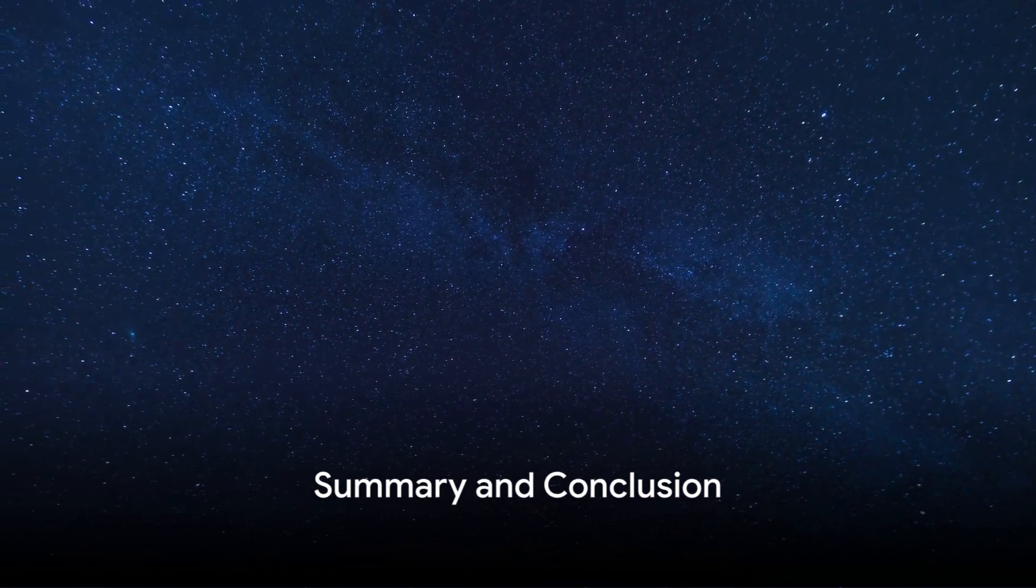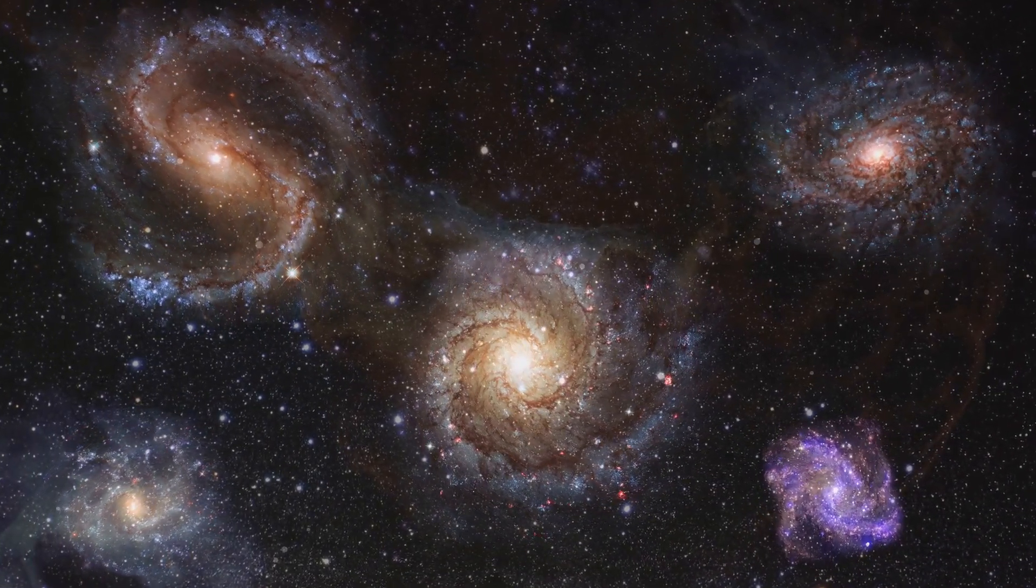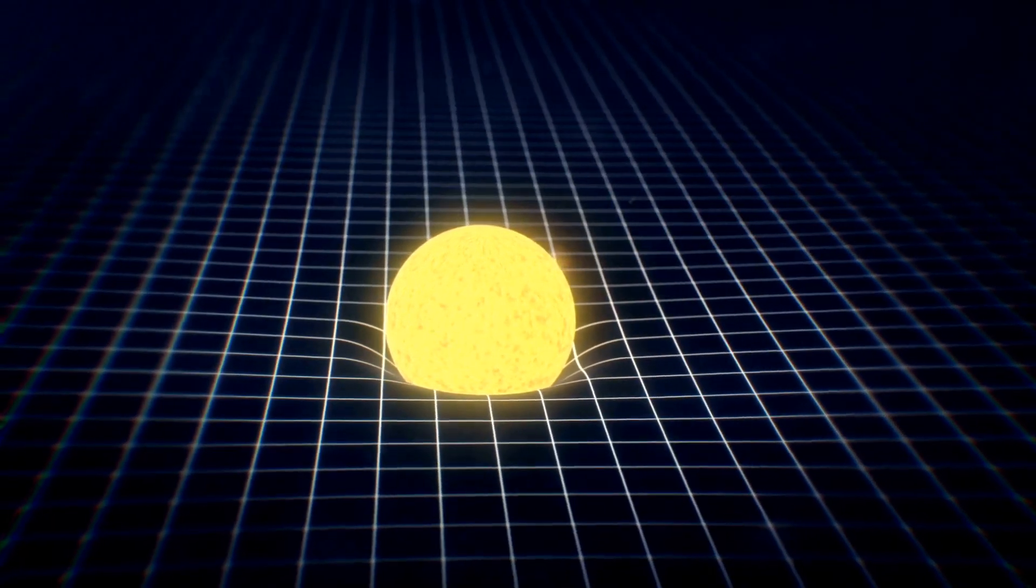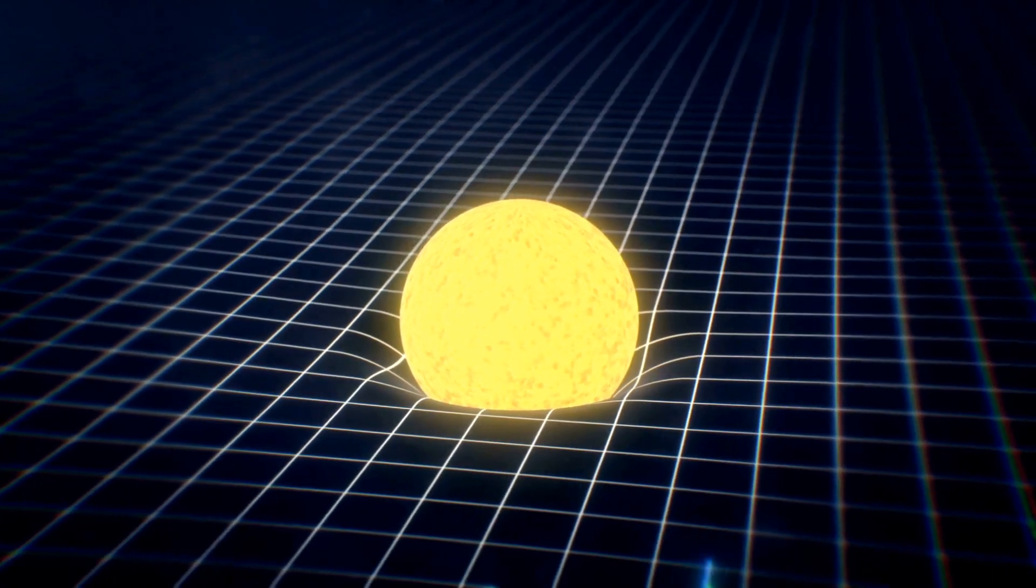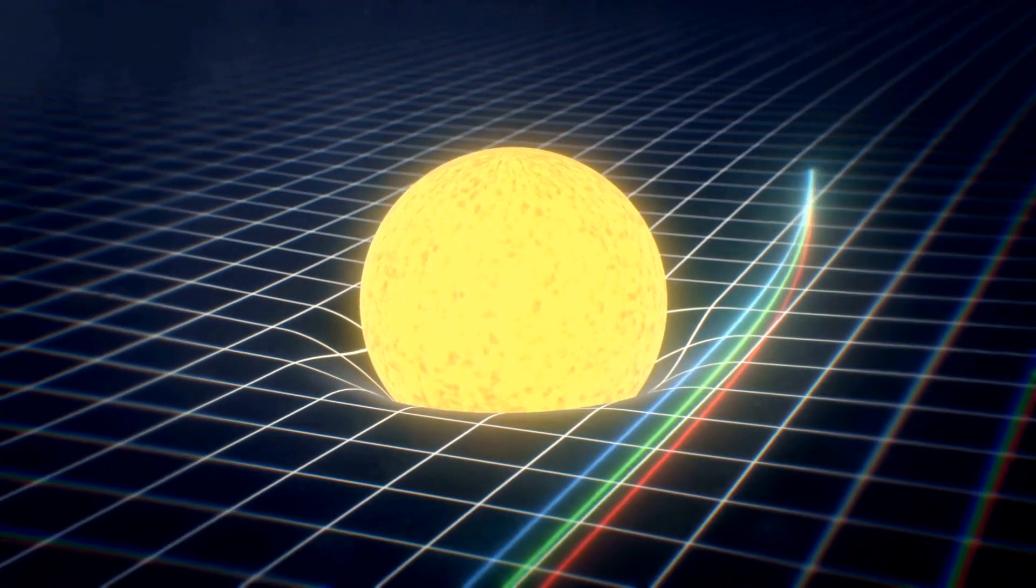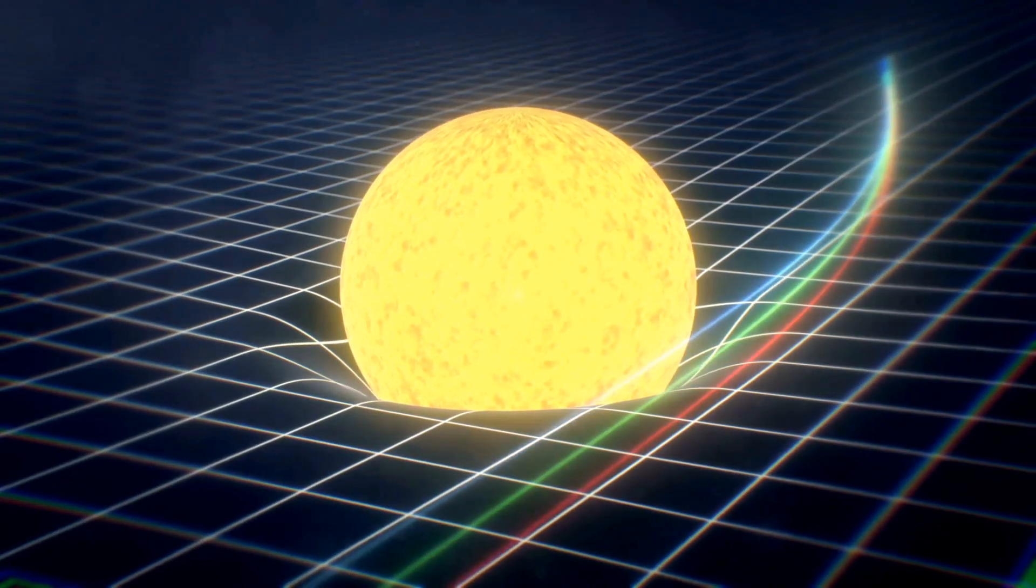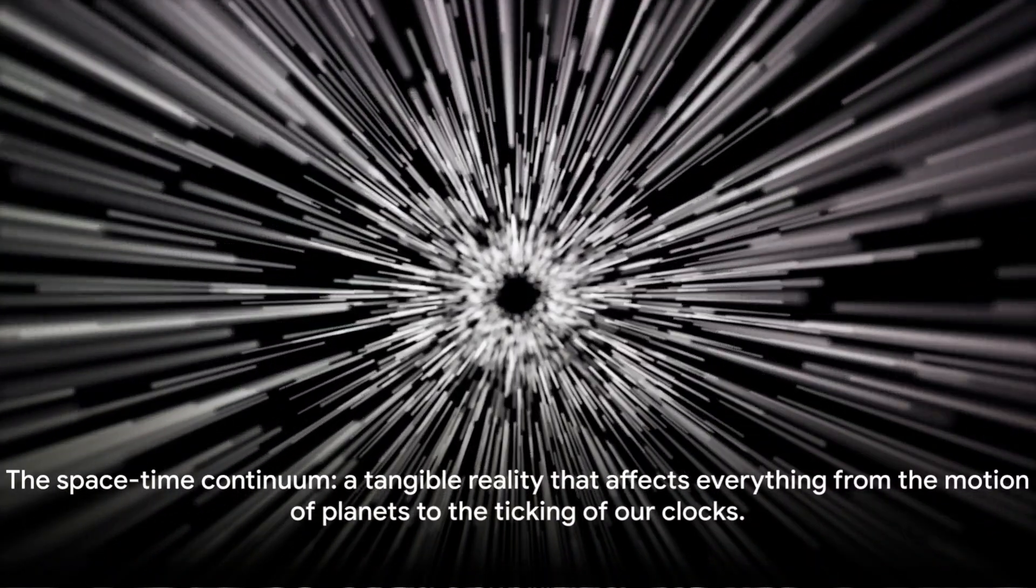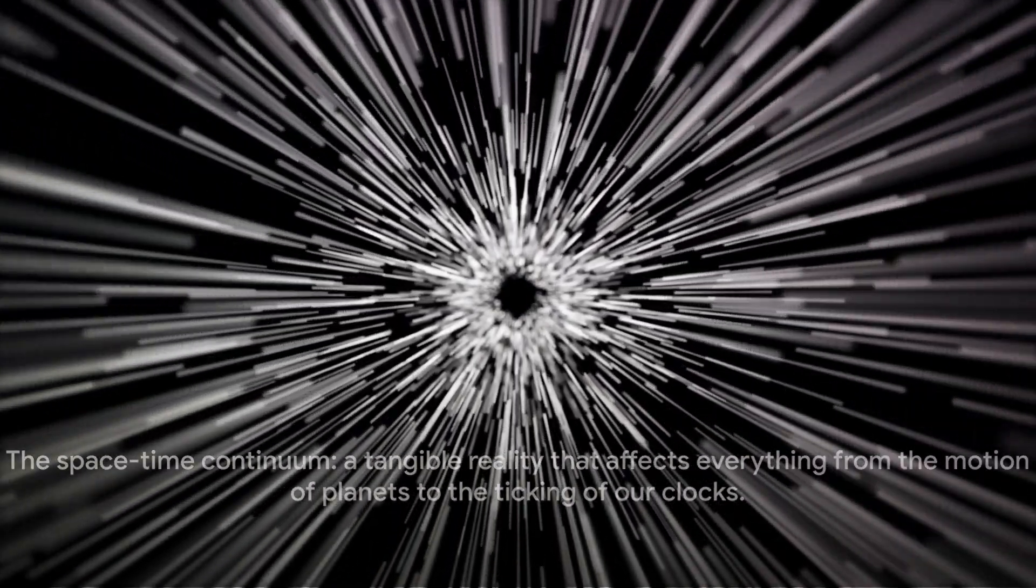Before we conclude, let's quickly summarize what we've learned about the space-time continuum. This fascinating concept, born out of the brilliance of Albert Einstein, is the very fabric that binds our universe. It's a four-dimensional model combining the three dimensions of space with the one dimension of time. We journeyed from the birth of space-time through the revolutionary ideas of Einstein. We delved into the concepts of time dilation and length contraction, the strange phenomena that occur at speeds close to light. We then explored how this fabric of the universe impacts us, from the microcosmic particles to the macrocosmic celestial bodies. The space-time continuum is a crucial aspect of our understanding of the universe.